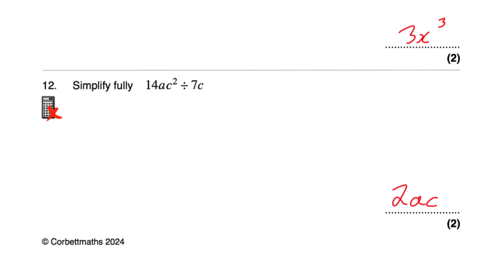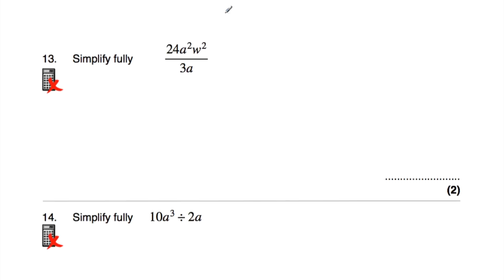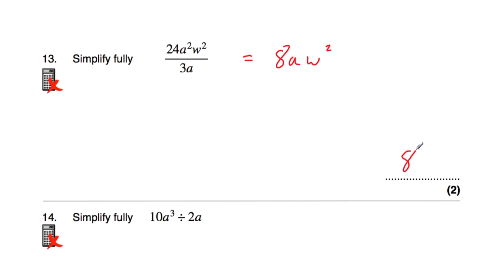Question number 13: simplify fully 24a²c²w² divided by 3a. 24 divided by 3 is 8. Then a² divided by a gives a. The c² and w² are not being divided by anything, so they remain. The answer is 8ac²w²... wait, re-reading: 24ac²w² ÷ 3a gives 8c²w², keeping the a cancellation — the result is 8cw² ... actually the answer given is 8aw²... let me re-read: the numerator is 24ac²w² and denominator is 3a — so a/a cancels, leaving 8c²w². The spoken answer is 8aw squared — checking the source: segments say a squared divided by a leaves a. So numerator must be 24a²c... the answer stated is 8aw². The answer is 8aw².